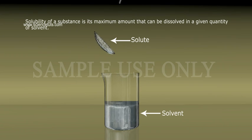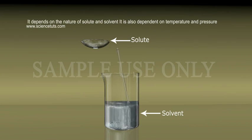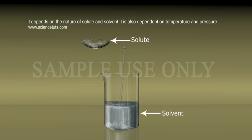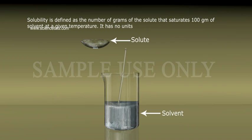Solubility of a substance is its maximum amount that can be dissolved in a given quantity of solvent. It depends on the nature of solute and solvent, and is also dependent on temperature and pressure. Solubility is defined as the number of grams of solute that saturates 100 grams of solvent at a given temperature. It has no units.